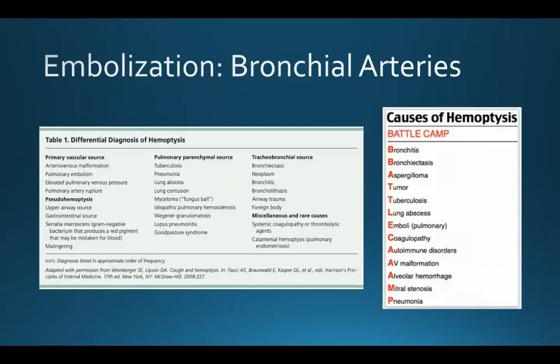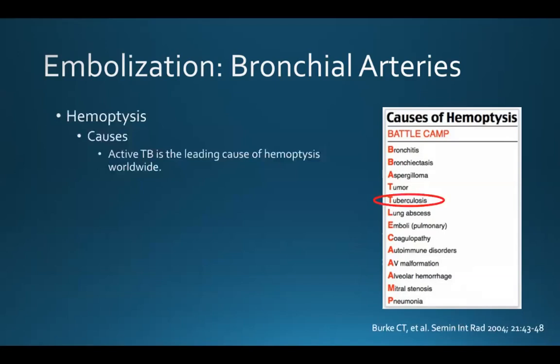As you can see on this table, the differential diagnosis of hemoptysis is extensive. There is a mnemonic BATTLE CAMP which can help you remember the major causes of hemoptysis. This includes bronchitis and bronchiectasis, aspergilloma, tumor and tuberculosis, lung abscess and pulmonary emboli, coagulopathy, autoimmune disorders, AVMs, alveolar hemorrhage, mitral stenosis, and pneumonia.